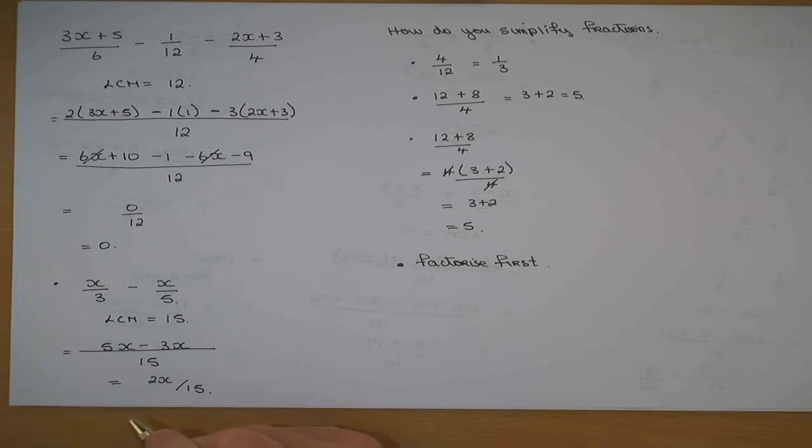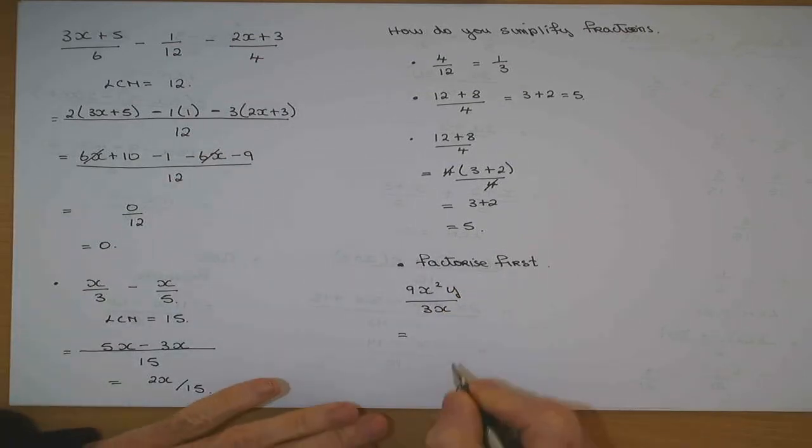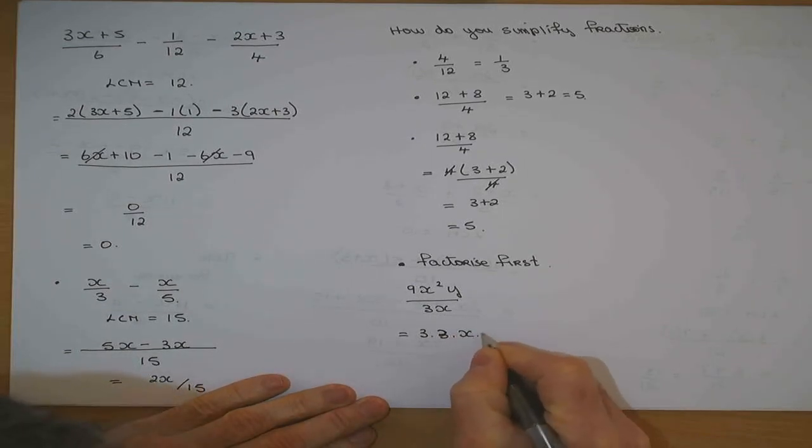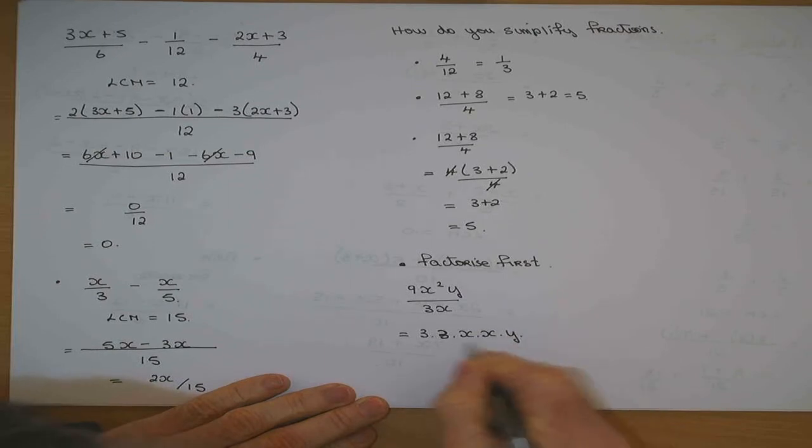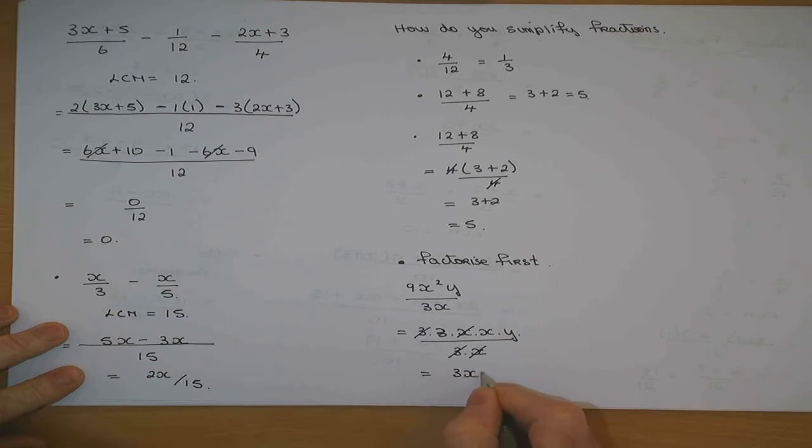9x squared y divided by 3x. 9x squared y could be written as 3 by 3 by x by x by y over the bottom 3 by x. So if I want to cancel algebraic fractions what must I do first? Factorize. That 3 goes with that and that goes with that. What am I left with? 3xy.